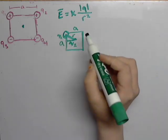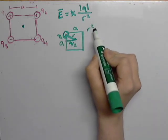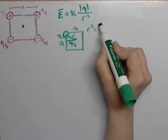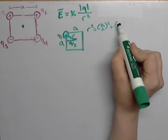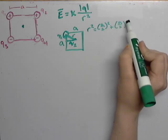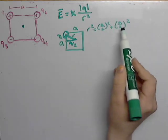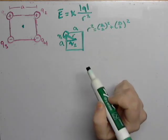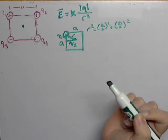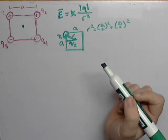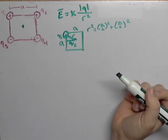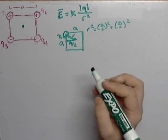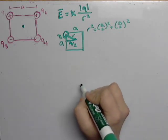By Pythagorean theorem, we can say R squared equals A over 2 squared plus A over 2 squared. And we can keep it in this form, since we're going to be dealing with an R squared anyway in the equation. So that's for Q1. What about Q2 or Q3 or Q4?